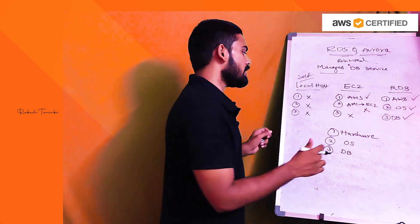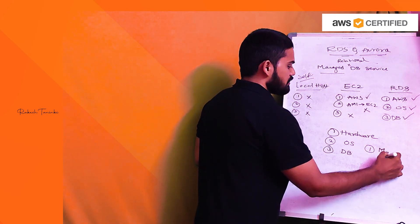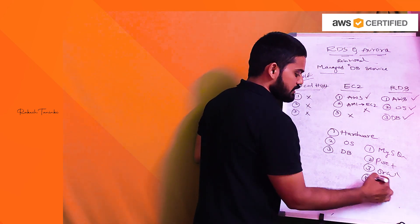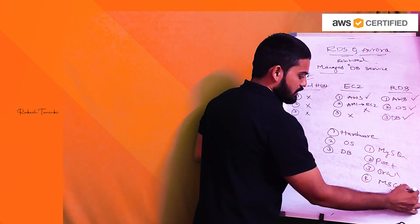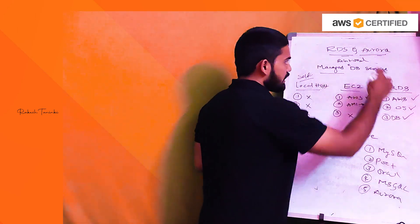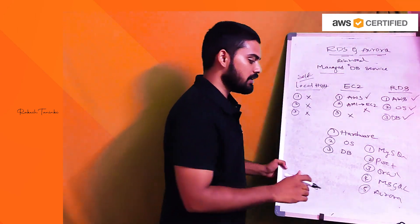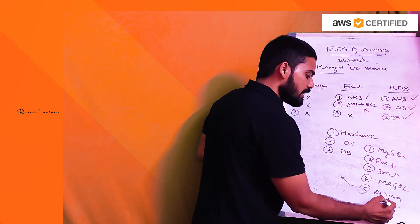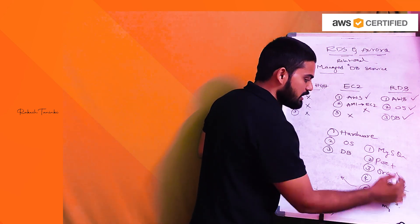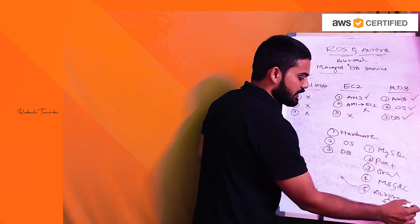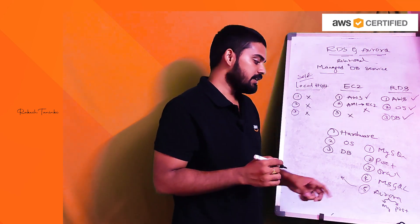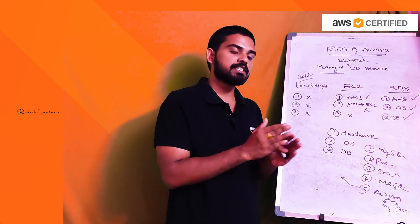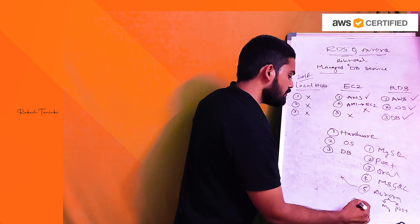RDS supports six different database engines in total. The first is MySQL, the second is PostgreSQL, the third is Oracle, the fourth is MS SQL, the fifth is Aurora, and the sixth is MariaDB. AWS developed Aurora as a proprietary service internally compatible with MySQL and PostgreSQL, and AWS hardware optimizations improve its performance.